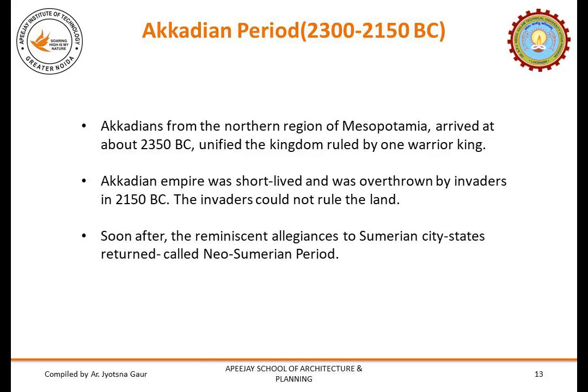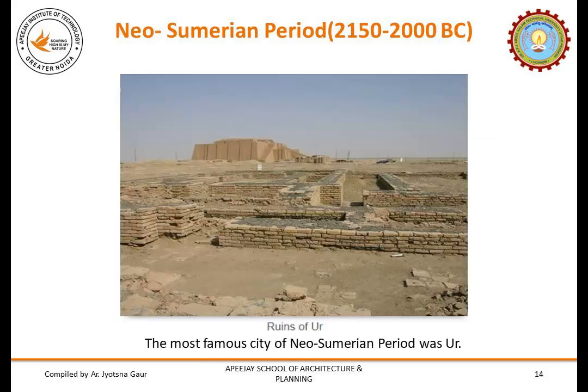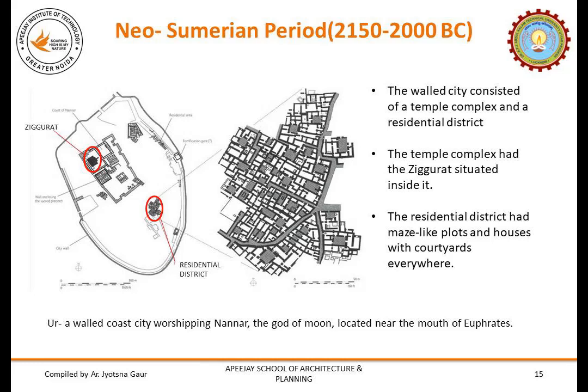The Akkadians from the northern region of Mesopotamia arrived at about 2350 BC and unified the kingdom under one warrior king. The Akkadian Empire was short-lived and was overthrown by invaders in 2150 BC. The invaders could not rule the land, and soon the allegiances to Sumerian city-states returned, giving rise to the Neo-Sumerian period. The most famous city of the Neo-Sumerian period was Ur, in modern day Iraq — a walled coastal city worshipping Nannar, the god of Moon, located near the mouth of the river Euphrates.